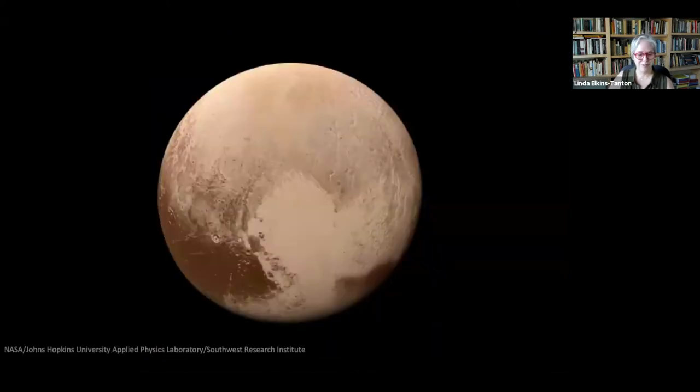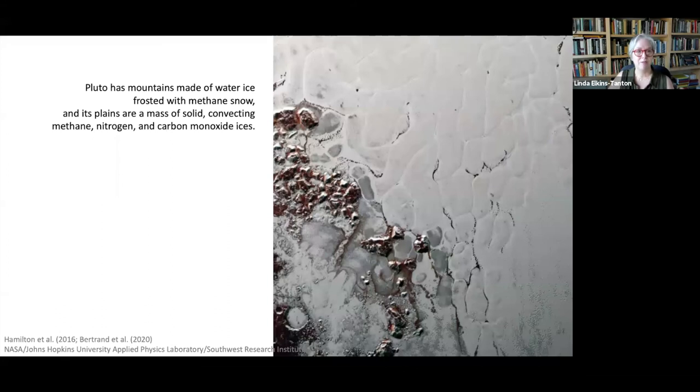So here is beautiful Pluto, still alive, that is still losing heat from its interior, heat that drives geologic processes on its surface. Such an amazing small world this is. Pluto has mountains that are made of water ice, which you see here in the red, covered with some organics, frosted with methane snow. And its plains are masses of solid but convecting, that is moving over time in plumes, methane, nitrogen, and carbon monoxide ices. And so the conditions at which Pluto exists, water ice is as hard as rock is for us here on Earth. And methane, nitrogen, and carbon monoxide are softer ices, and they can actually move over time as they transport heat from the interior. Absolutely amazing.